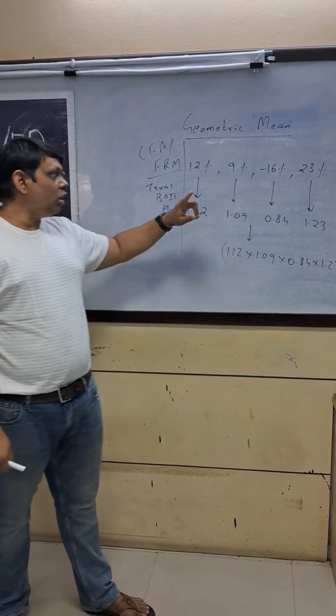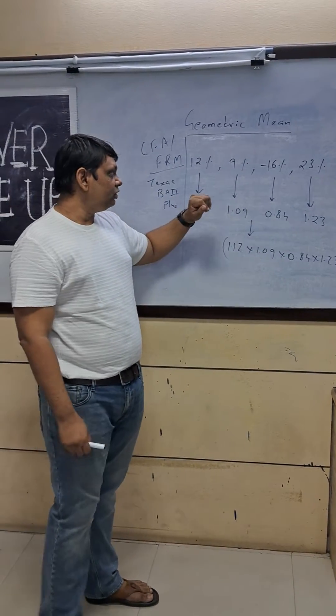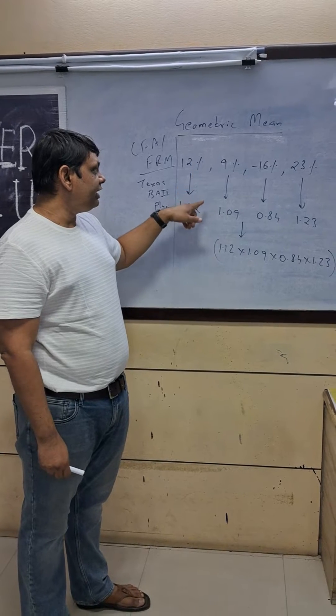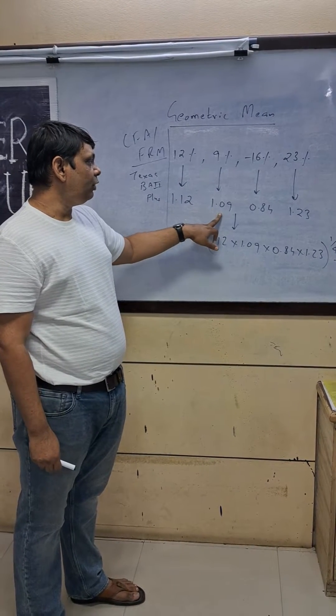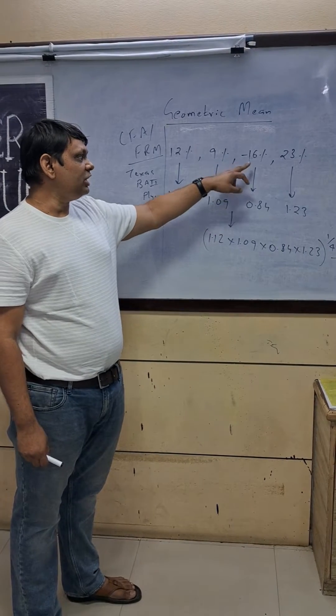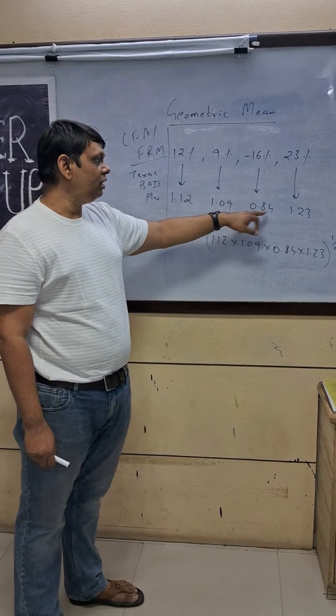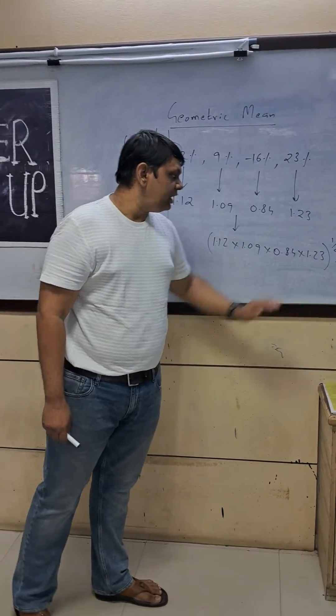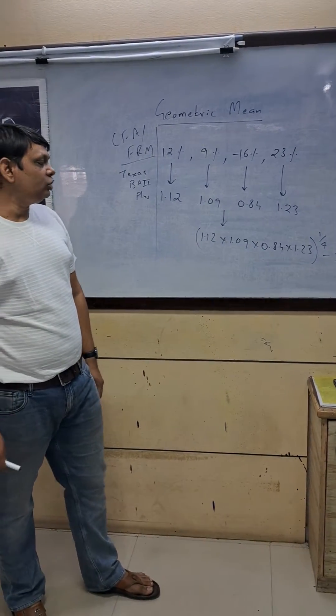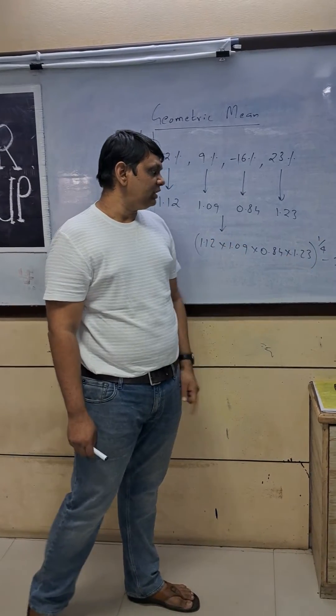To find the geometric mean, first convert to decimal and add one: 1.12, 1.09, 0.84 (from -0.16), and 1.23. Then multiply these together and raise to the power of 1/4, since we have four data points, and finally subtract one.